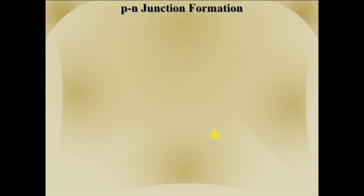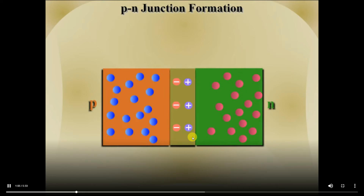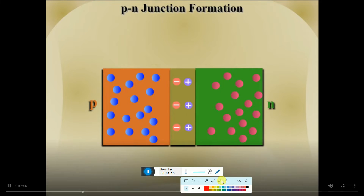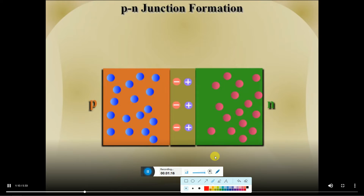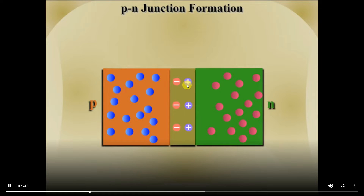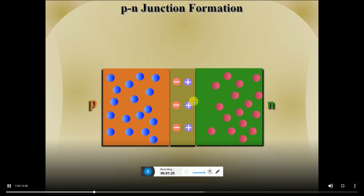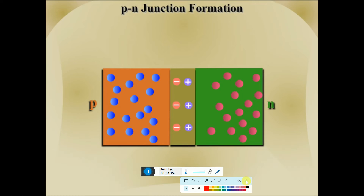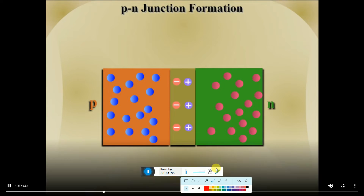Due to diffusion of electrons and holes from one region of the PN junction to the other, immobile ions are exposed in the crystal lattice. In the n region, positive ions are exposed and in the p region, negative ions are exposed. This way an electric field is established in the PN junction, which opposes further diffusion of charge carriers across the junction.